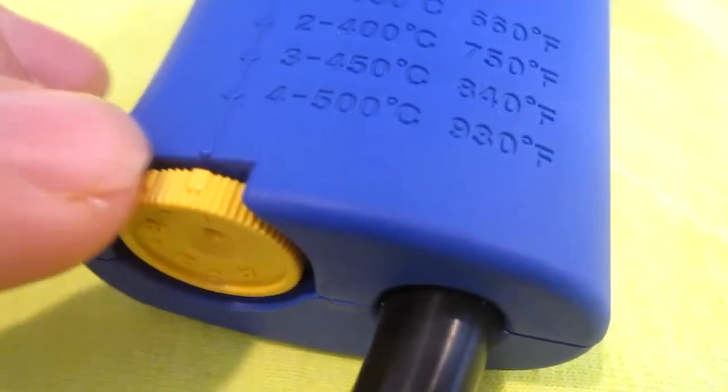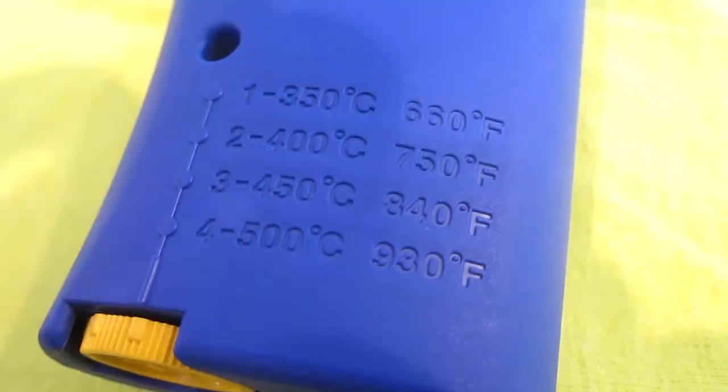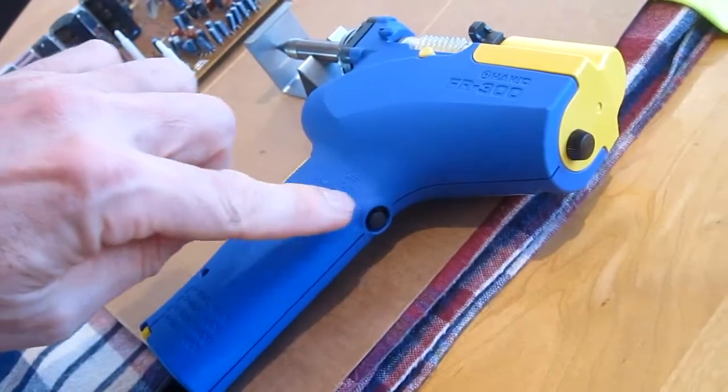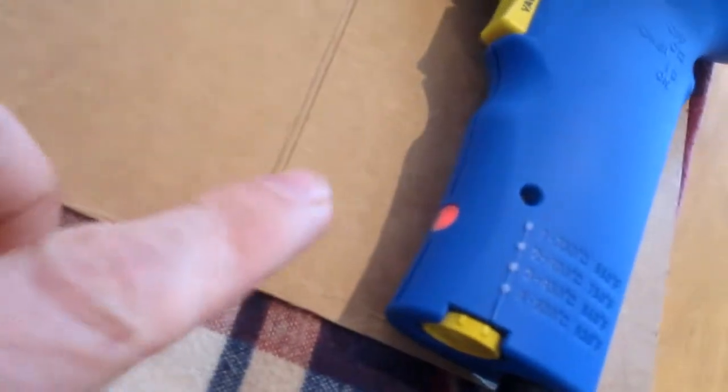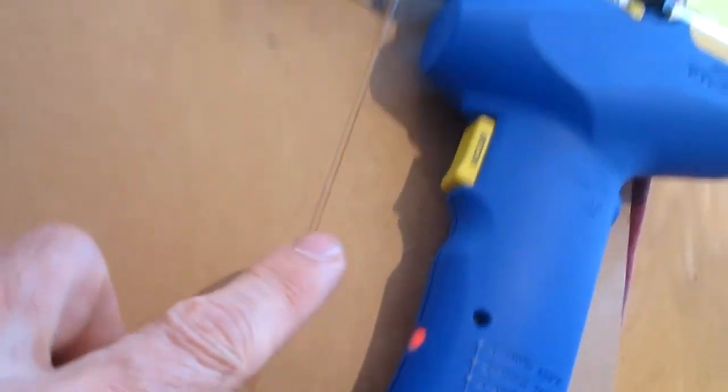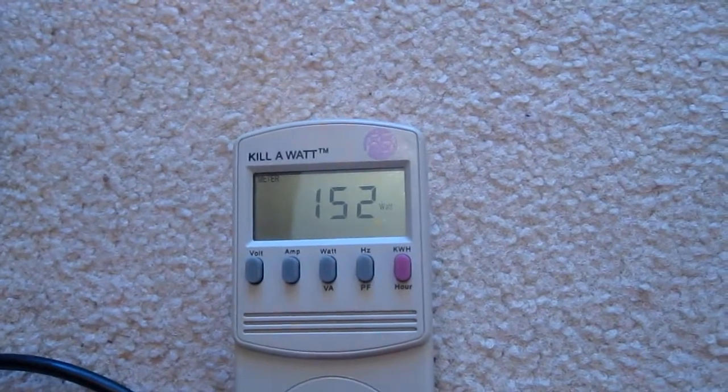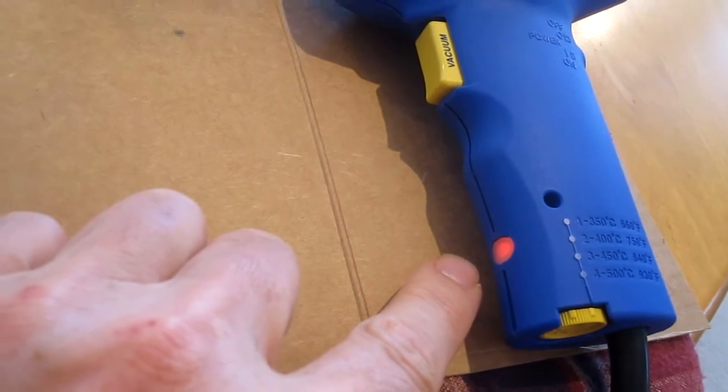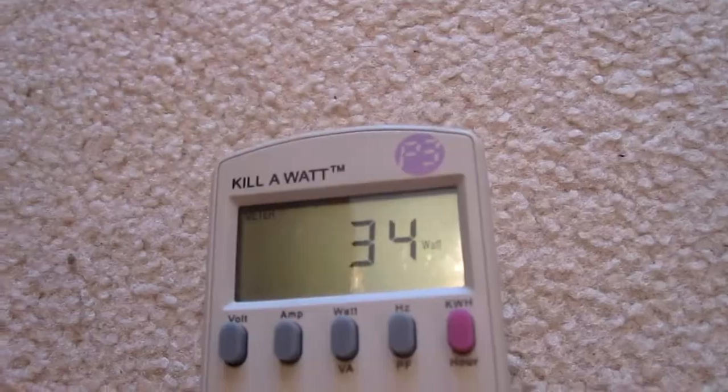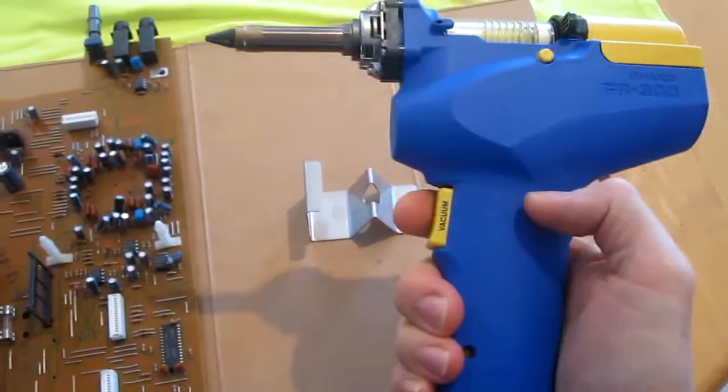It has a temperature adjustment dial with 4 settings. I found the first setting is plenty hot enough. This is the on-off button. This light comes on saying it's starting to heat up. As it's heating up it's using about 150 watts. As it gets up to temperature the light goes out and it cycles as it maintains the heat, and then the watts fluctuate and go from 0 to 140. This is the trigger.